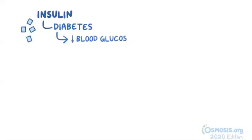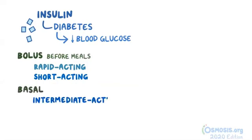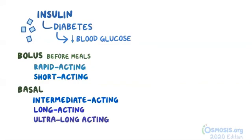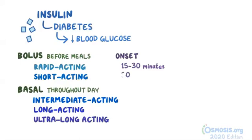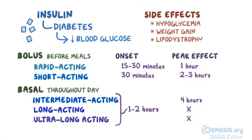As a quick recap: insulins are given to people with diabetes to lower blood glucose. Bolus insulins — rapid-acting and short-acting — are given before a meal to control post-meal hyperglycemia. Basal insulins — intermediate-acting, long-acting, and ultra-long-acting — are given to control fasting glucose throughout the day. Rapid-acting insulins have the fastest onset at 15-30 minutes, followed by short-acting at 30 minutes, while intermediate-, long-, and ultra-long-acting start working between 1-2 hours. Only intermediate-, short-, and rapid-acting insulins have peak effects — at over 4 hours, 2-3 hours, and 1 hour respectively. Major side effects of insulin include hypoglycemia, weight gain, and lipodystrophy at the injection site.